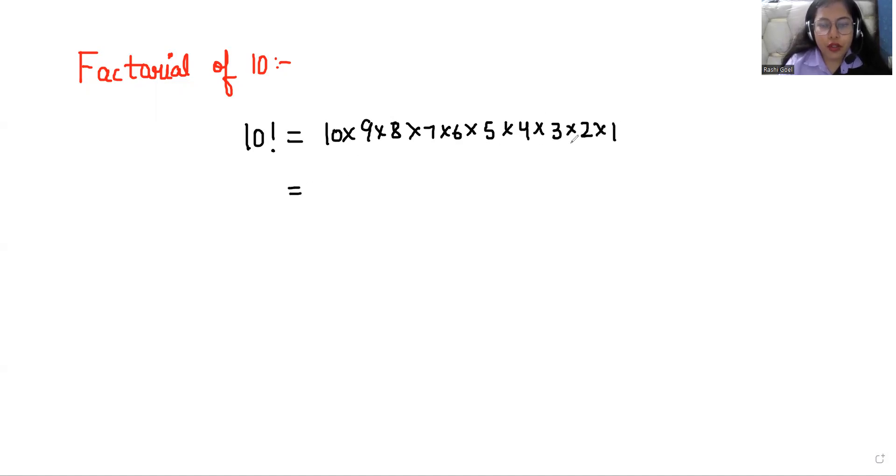After doing the multiplication, we get 3,628,800. So the factorial of 10 is 3,628,800.